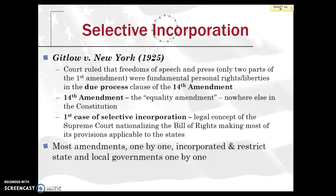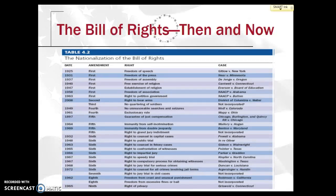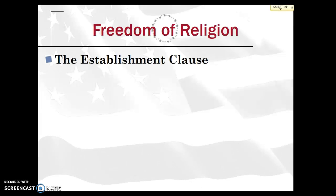Notice the word 'selective' — you're picking parts of each amendment and saying all 50 states must abide by this. Most amendments are incorporated one by one, ultimately restricting state and local governments. Freedoms of speech and press as of 1925 now pertain to the states. This nationalization of the Bill of Rights has been a continuing phenomenon since 1925; even as of 2008, the right to bear arms was nationalized through District of Columbia v. Heller. So there are many cases involving selective incorporation — it is a very important concept.